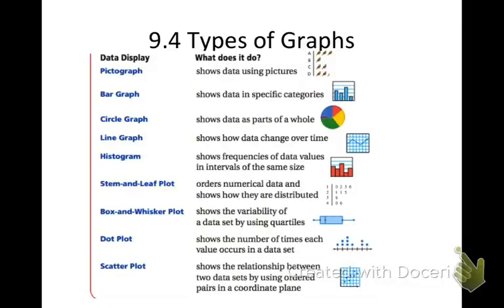We are starting section 4 of chapter 9, which looks at types of graphs. Please write this title down and look at the diagrams below. There are many ways to represent your data. The book gives you all these different ways, but we're going to focus on just a couple: bar graphs, circle graphs (which I also call pie graphs), and line graphs. We're going to focus on how to work with those three types of graphs.